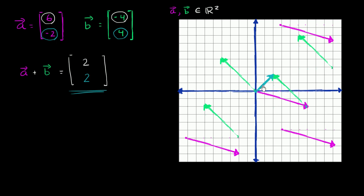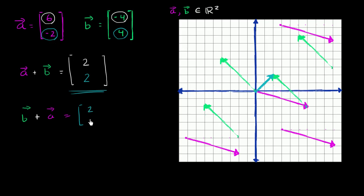Vectors don't only apply to displacement — they can apply to velocity, acceleration, and a whole series of things. Now one question you might have: vector A plus vector B gives us this, but what is vector B plus vector A? Based on the definition where we add corresponding components, you still get the same sum vector. Negative four plus six is two, and four plus negative two is two.